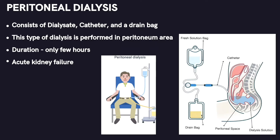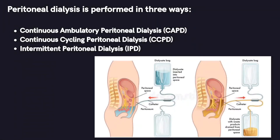Peritoneal dialysis is done for patients having acute renal failure and is performed in three ways. First, continuous ambulatory peritoneal dialysis, performed several times a day while the patient is awake, and does not need any machine. Second, continuous cycling peritoneal dialysis, where a machine sends dialysate into the peritoneum and removes drainage from the abdominal cavity — performed only when the patient is asleep. Third, intermittent peritoneal dialysis, similar to continuous cycling but takes longer and is performed in the hospital.